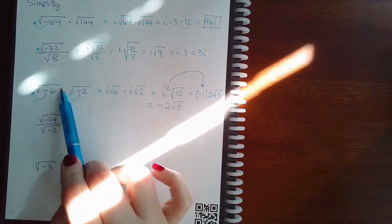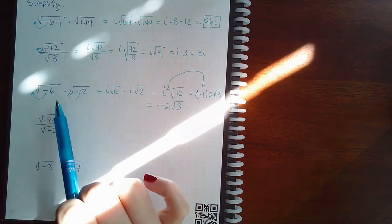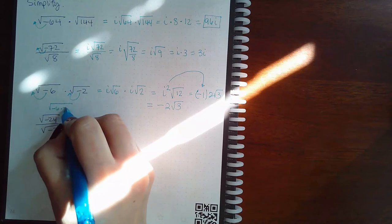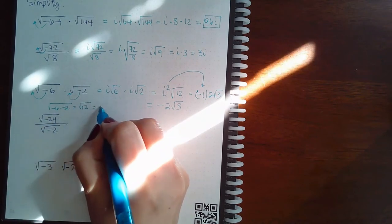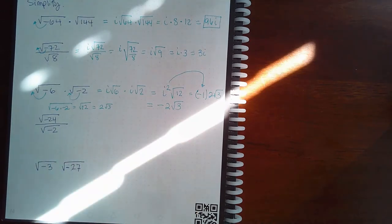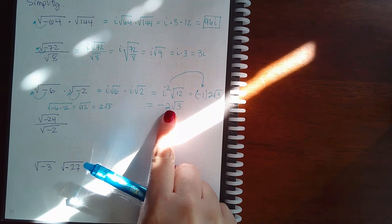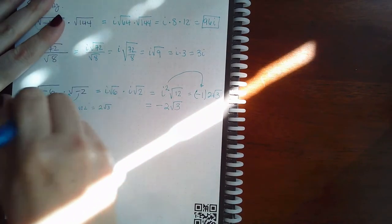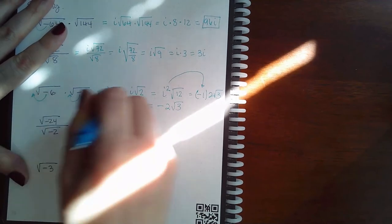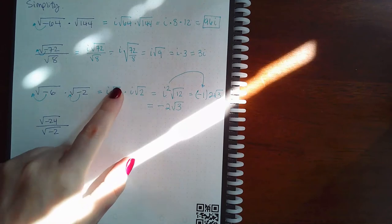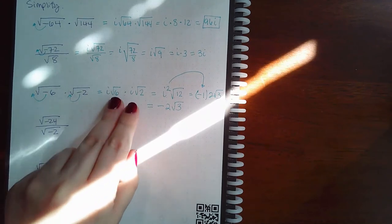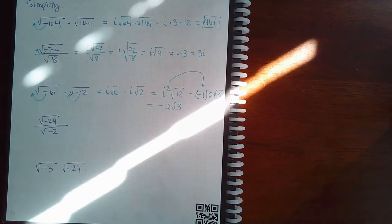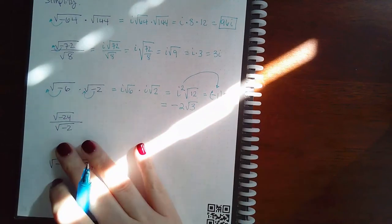Had I done this incorrectly — forgetting that both factors must be real numbers before multiplying the insides — and just computed √(−6 × −2) = √12, I would have gotten positive 2√3. But that's wrong; the correct answer is negative 2√3. You cannot apply that radical multiplication rule when the radicals are not real. Once you extract the i's, the remaining parts are real and can be multiplied inside the square root at that point.